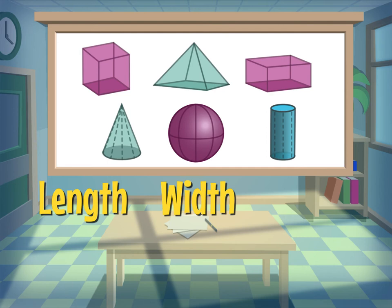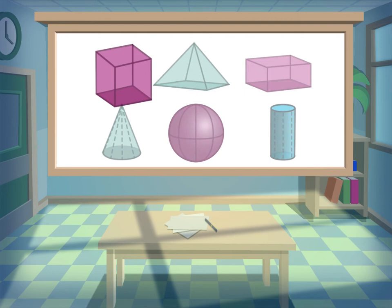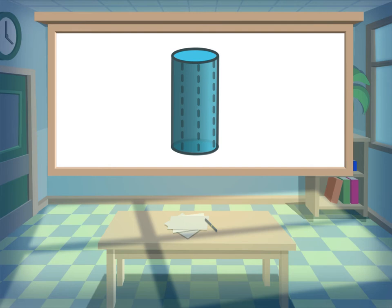There are lots of different 3D shapes. For example, this is a cube. This is a cylinder. This is a sphere.